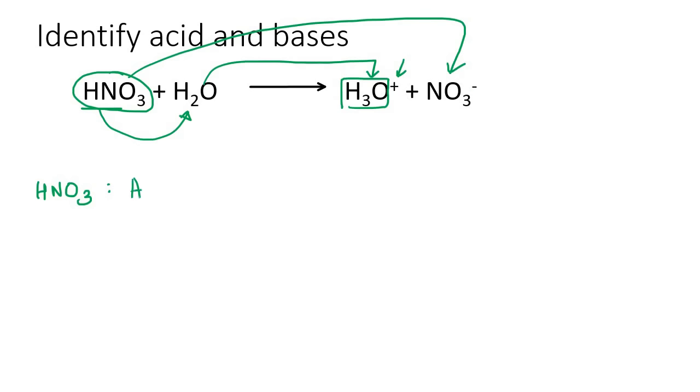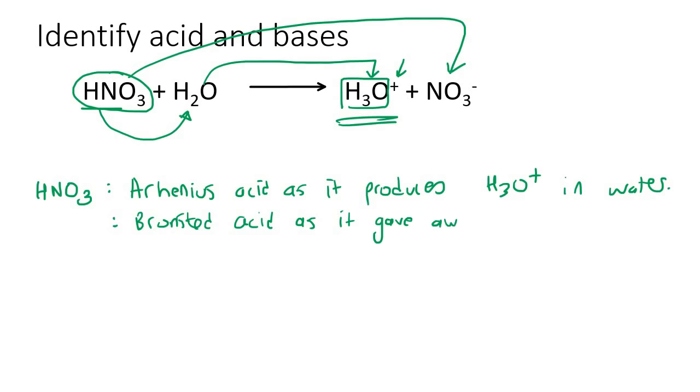So we can say that it is definitely an Arrhenius acid. Why? Because it produces H3O+ in water. It is also going to be a Bronsted acid as it gave away a proton. And remember a proton is H+, so it gave an H+ away.